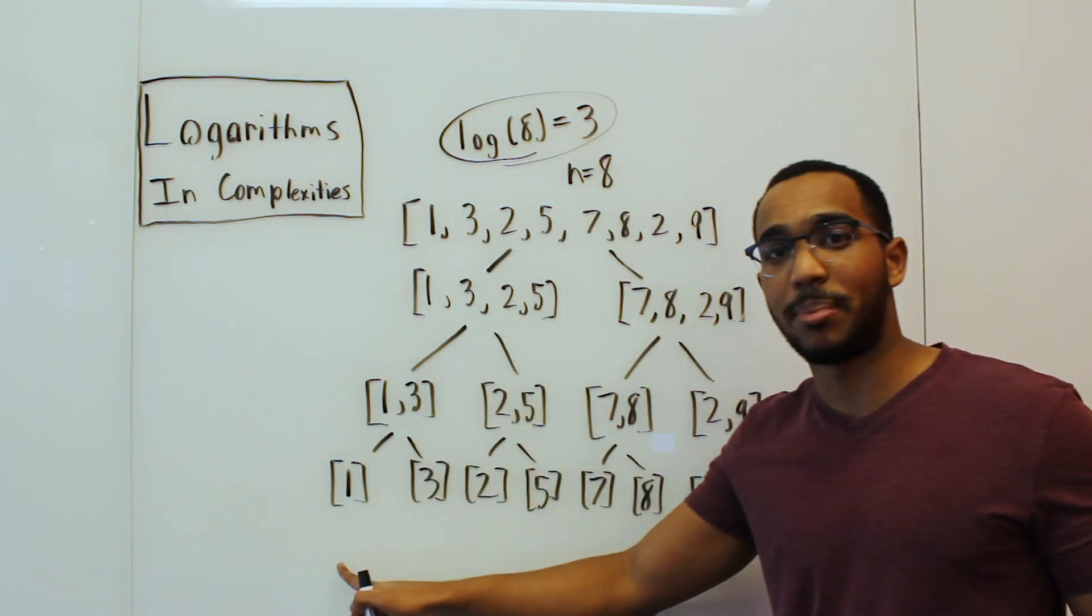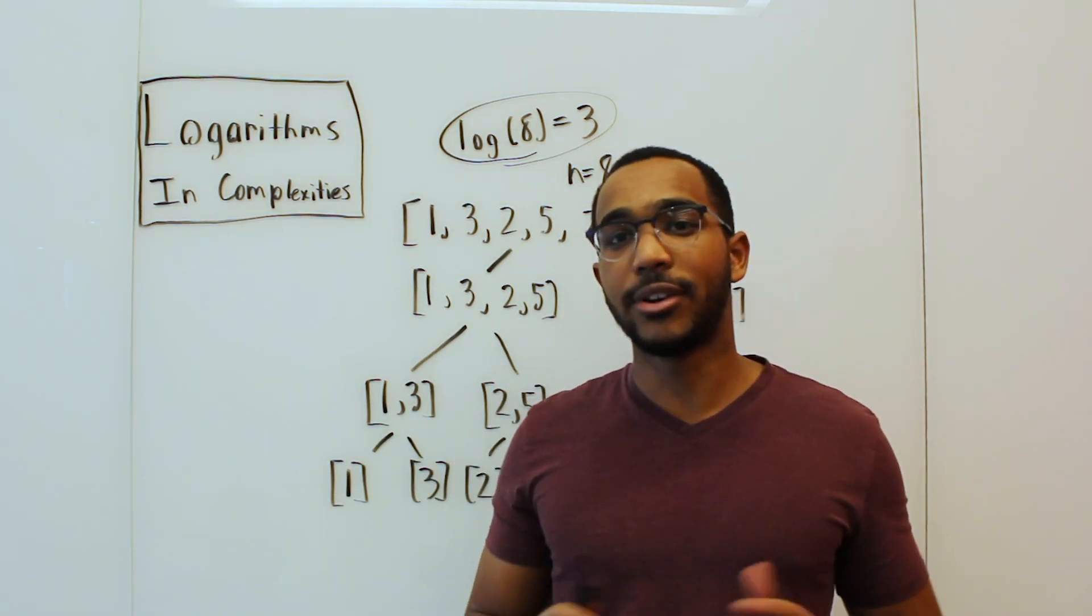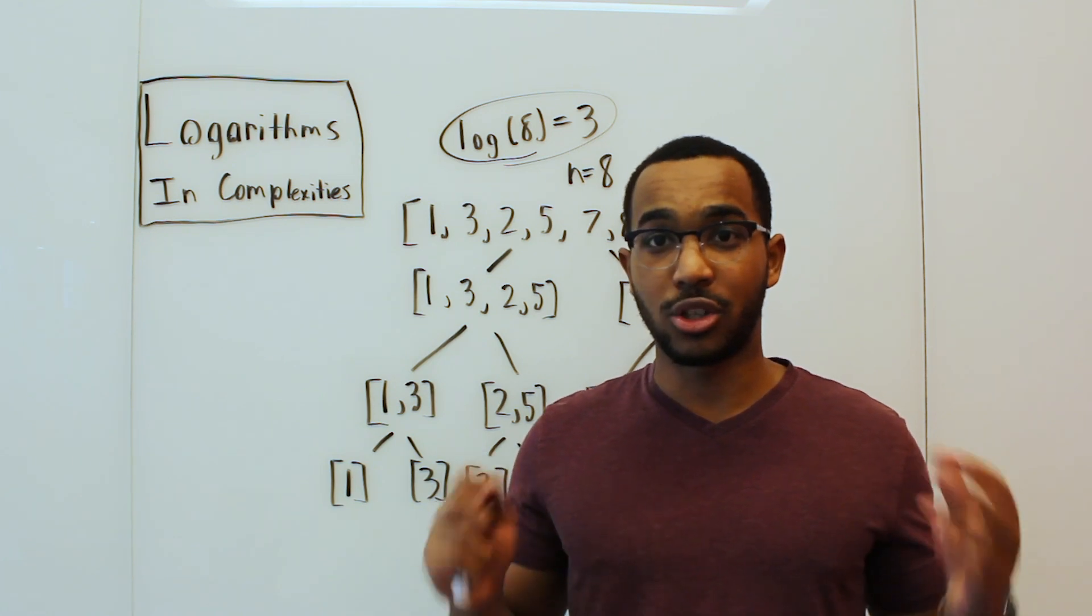This is what merge sort and quick sort will do when they're partitioning the array. In merge sort's case, we drill down to base cases, and then we come back upwards with a sorted array. Now let's look at another example where logarithms show up.